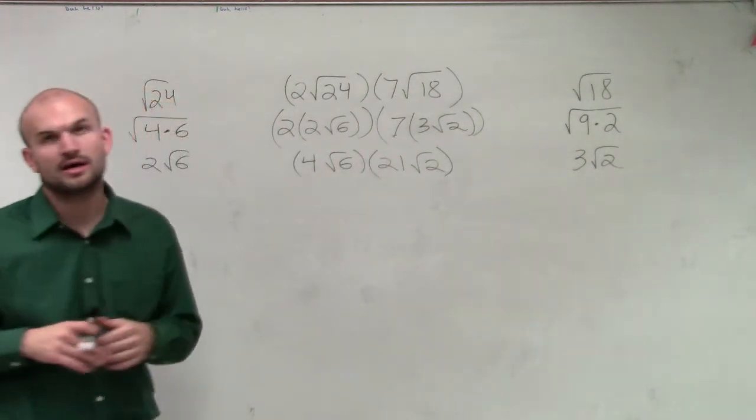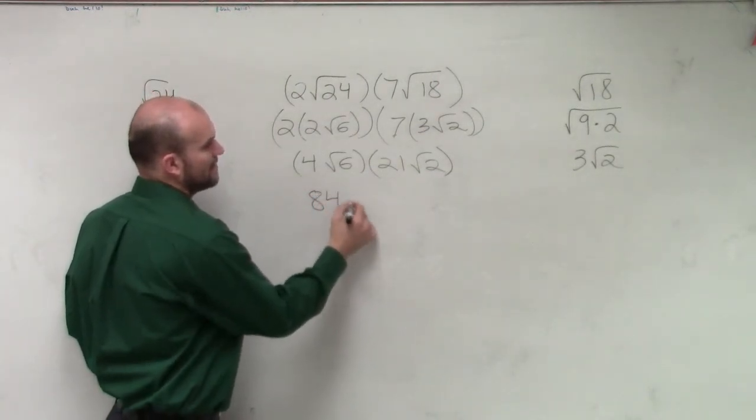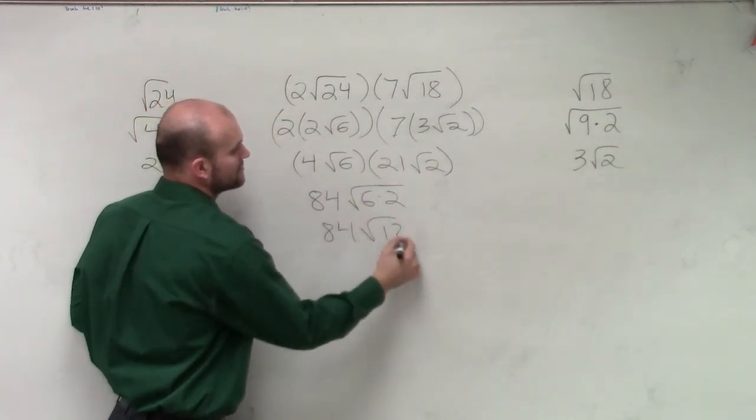So therefore, I have 4 times 21, which is going to be 84. And then I have the square root of 6 times 2. So I have 84 equals the square root of 12.